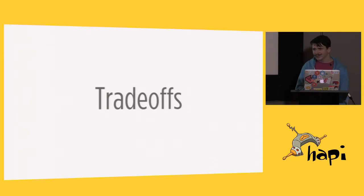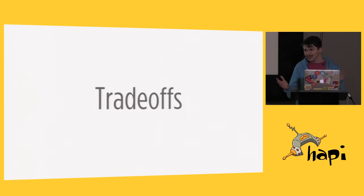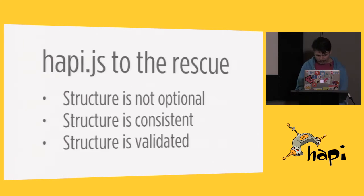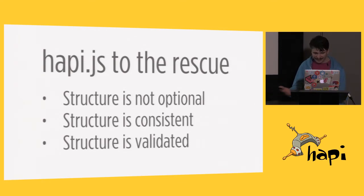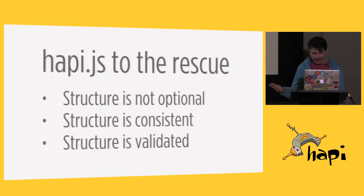Validating all data structures is the norm rather than an outlier. It's what people do. The more common thing you'll see in a HAPI application is validators for everything, which is awesome. Structure in HAPI is not optional. It's consistent. It's validated. It doesn't let you do a lot of crazy things that other frameworks let you do, which, as a security person, I think is great.